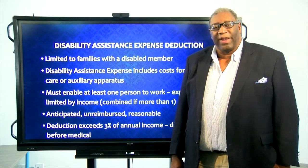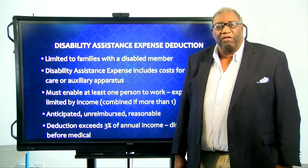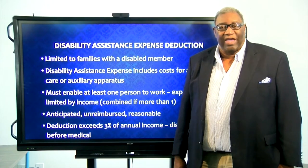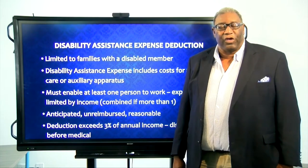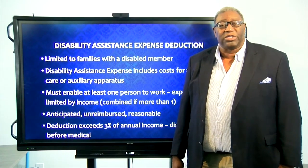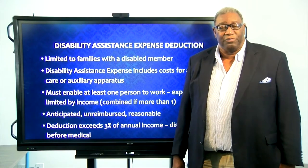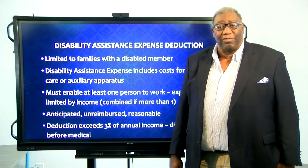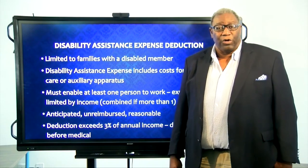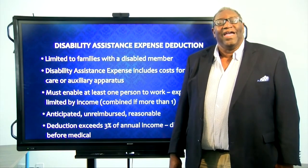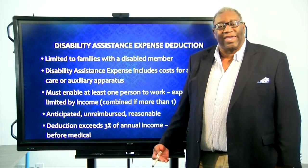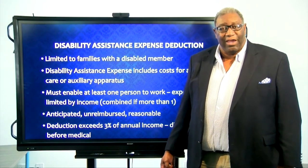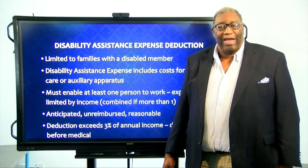In order to apply this deduction, first there has to be someone in the family that's disabled. It does not have to be the head, co-head, or spouse — just anyone in the household who's disabled. Secondly, someone in the household, including the disabled person, must go to work. And thirdly, what we can account for is either attendant care or auxiliary apparatus.